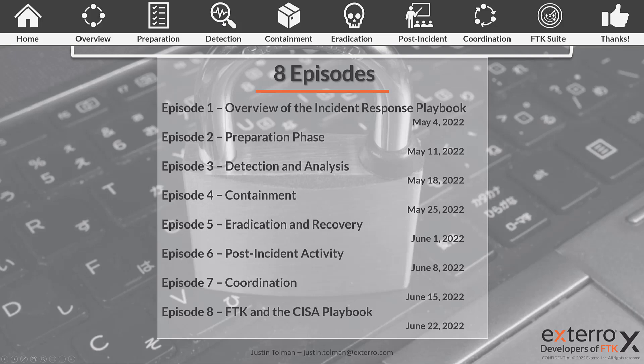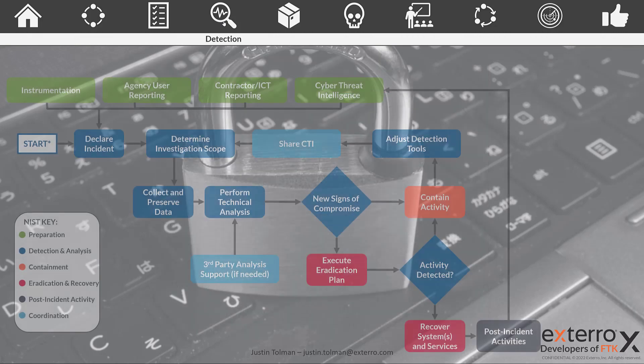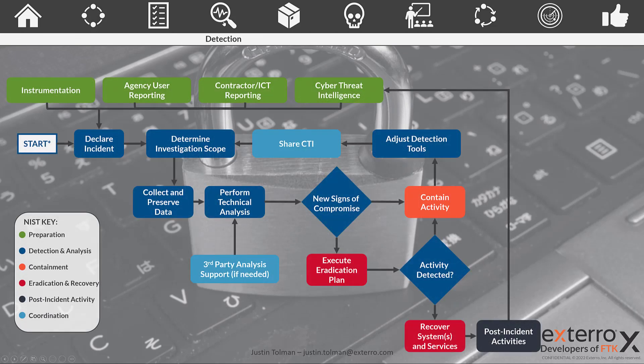Let's go over detection and analysis as part of the CISA Incident Response Playbook. Just as a review, this is the flow chart of the playbook. We've covered preparation, which is up in green, and now we're going to drop down — there's been an incident, and we need to begin jumping through the process of the playbook.